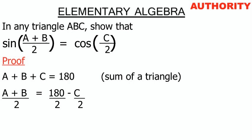Now let's divide everything by two. We get (A+B)/2 = 180/2 − C/2, which simplifies to (A+B)/2 = 90° − C/2.